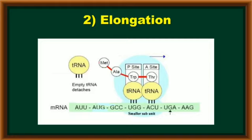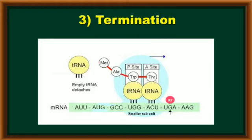Here, for our convenience, we take only 4 genetic codes, and the 5th codon is the terminating codon. Now, the next process is termination. In termination, when the ribosomal complex reaches the terminating codon, immediately with the help of terminating factors, these terminating factors help for termination. In prokaryotes, Rf1 and Rf2 generally act as terminating factors. In eukaryotes, ERf1 acts as a terminating factor.